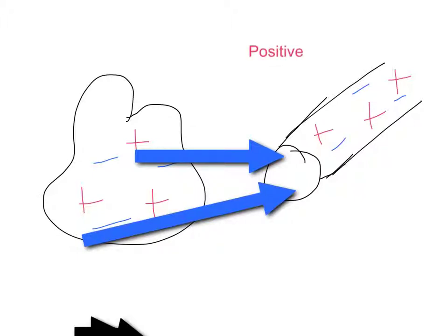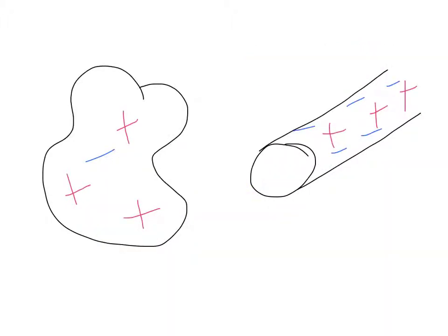The important thing to remember is that positives don't move. The negatives have transferred to the ebonite, and it becomes negative while the fur becomes positive because most of its negatives were transferred to the ebonite rod.